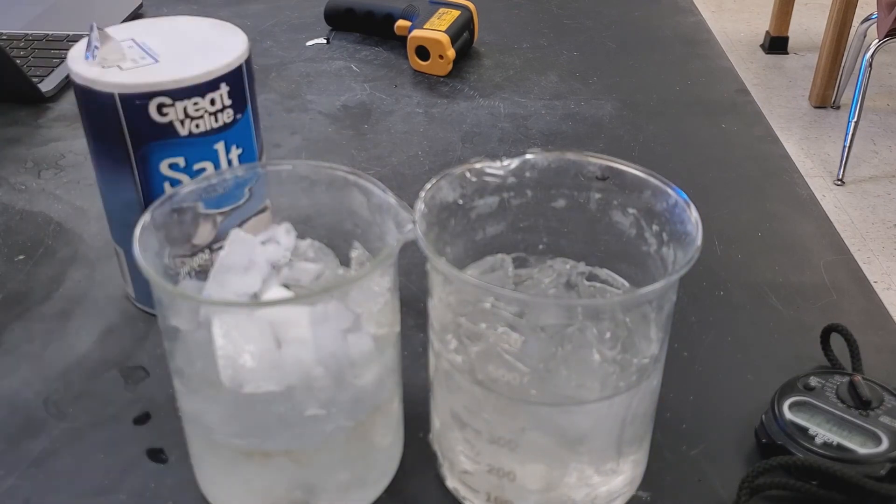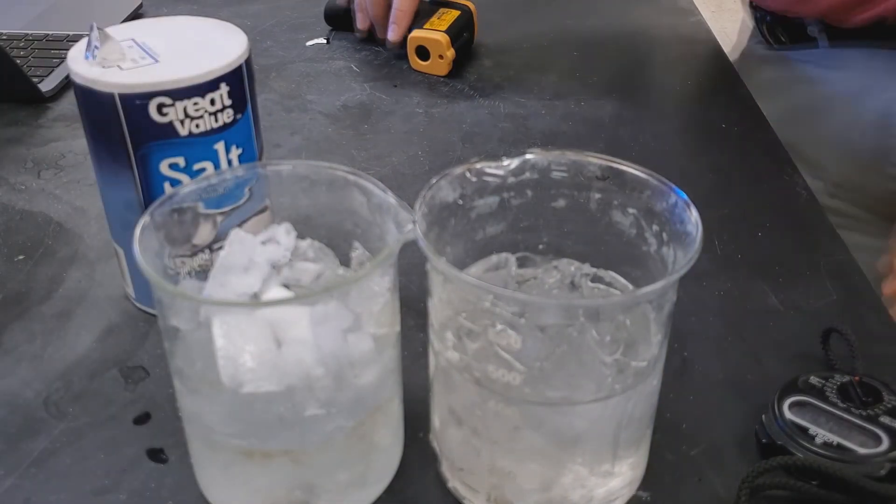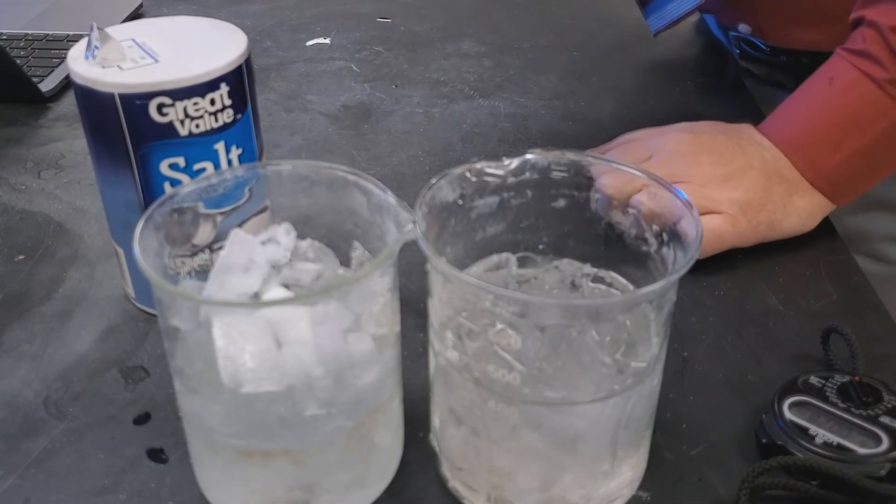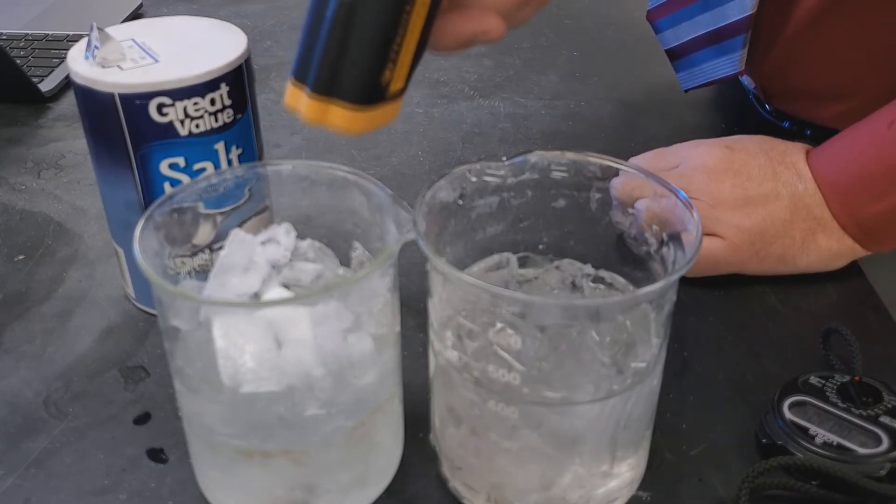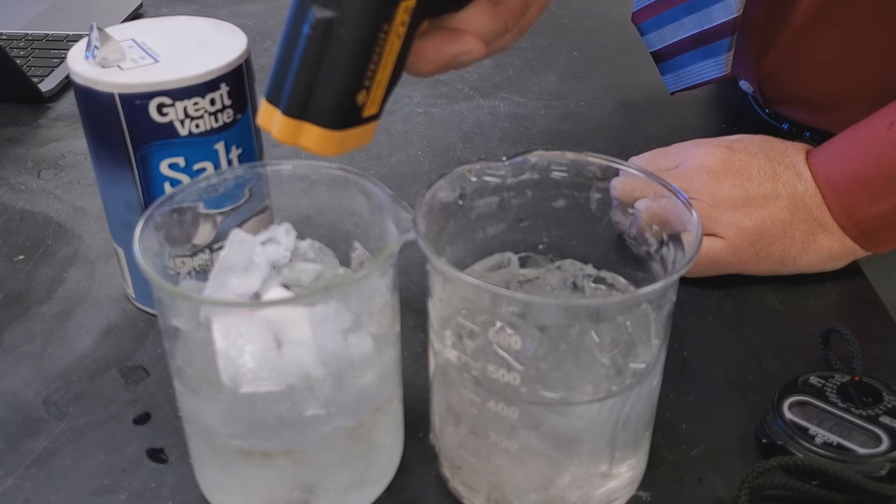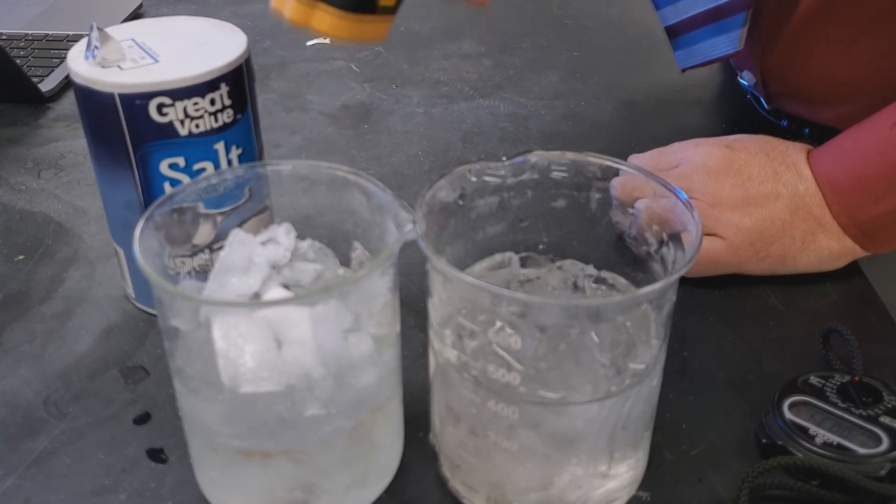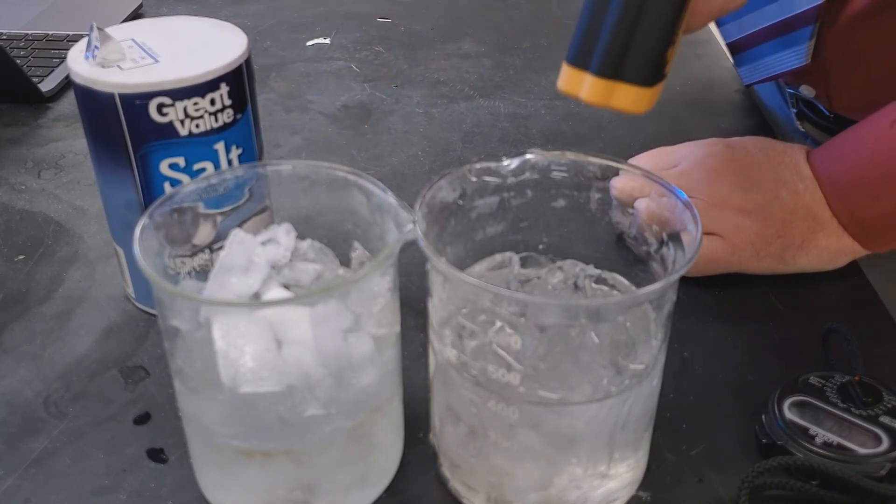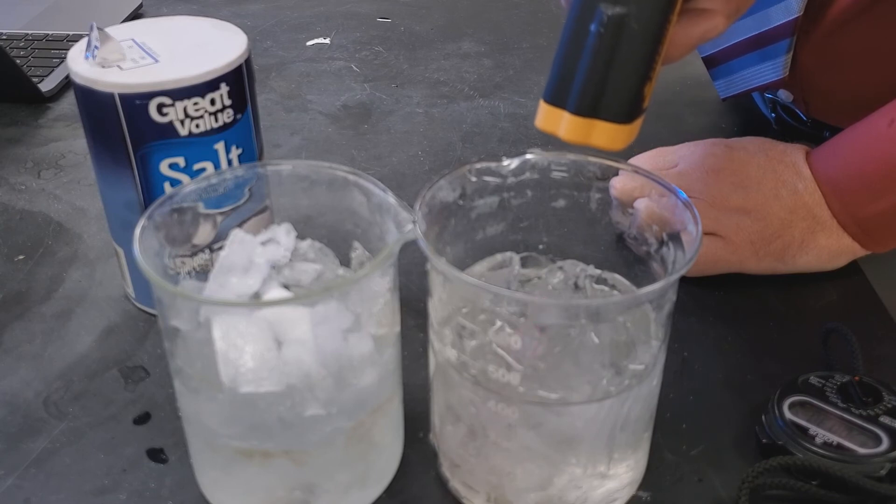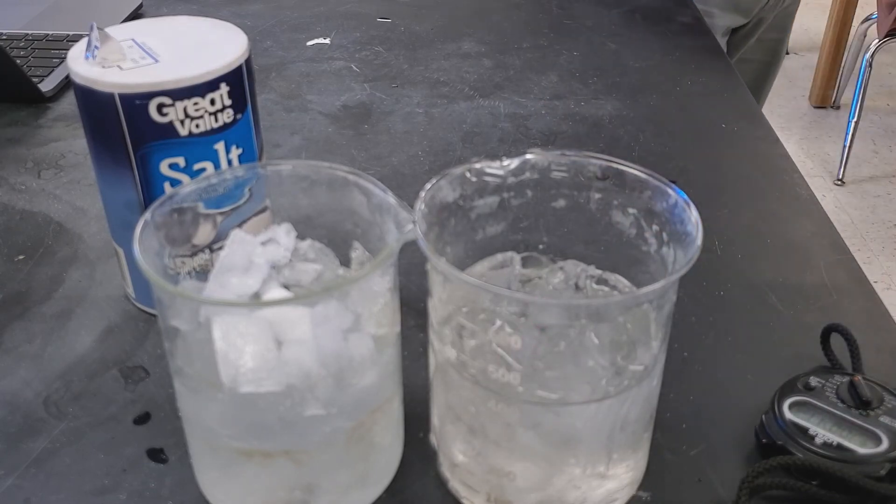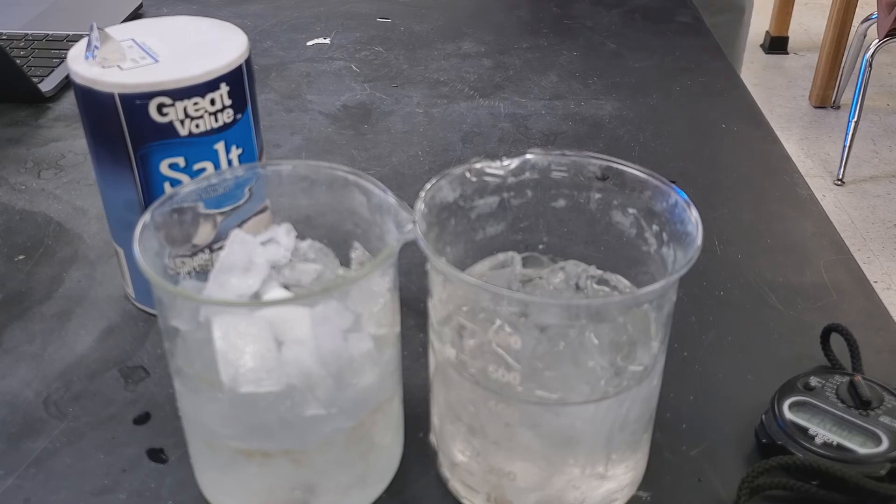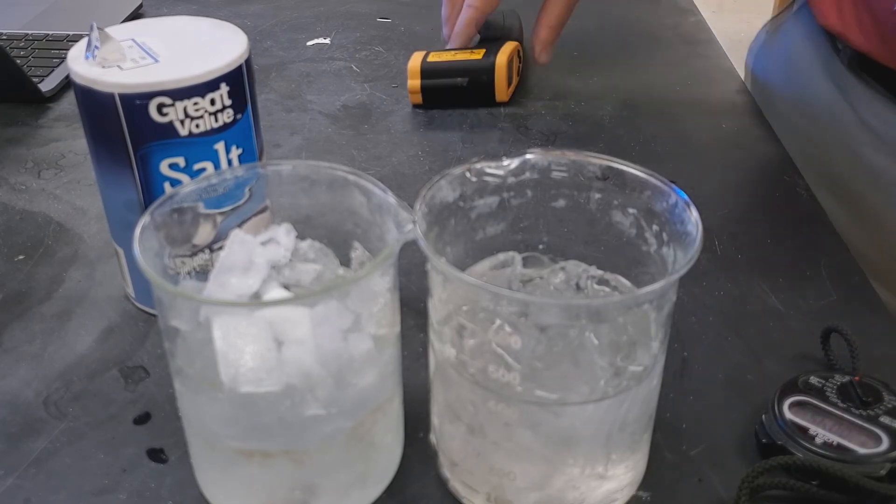This is the salted side. All right, after 30 seconds, here's the temperature of the salt side. Is that 0.5 for 30? Negative 19.8 on the salt, negative 0.3 no salt. It got way colder, didn't it?